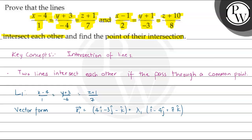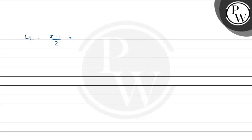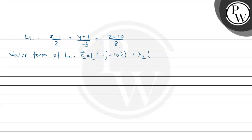Similarly, line L2 is (x−1)/2 = (y+1)/(−3) = (z+10)/8. Converting to vector form, R2 = (i − j − 10k) + λ2(2i − 3j + 8k), where λ2 is the parameter for line L2.